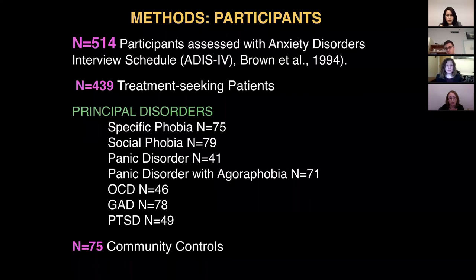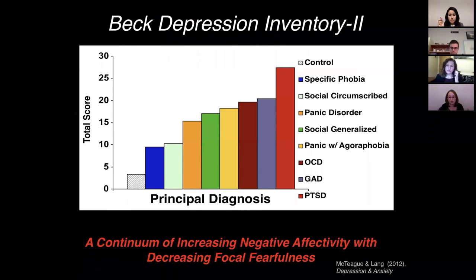We've used narrative imagery extensively in anxiety patients, and I'll show data from over 500 participants representing basically each of the principal anxiety spectrum disorders, as well as a sample of demographically matched community controls. Before we jump into the physiological data, if you look at their symptom scores, ordering individuals by severity, what emerges is a continuum of increasing negative affectivity with decreasing focal fearfulness.